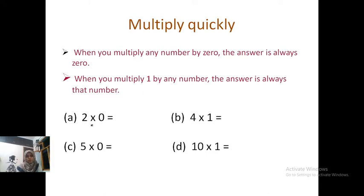For example, 2 x 0, so our answer is 0. Because when we multiply any number by 0, the answer is always 0. Next, 4 x 1. The answer is that number, so our answer is 4. 5 x 0 is equal to 0. And 10 x 1 is 10. Clear student. Next question.